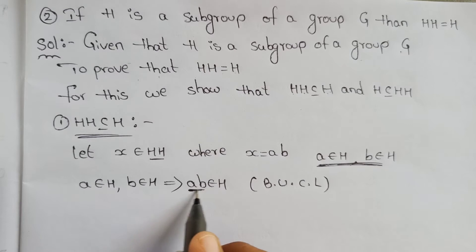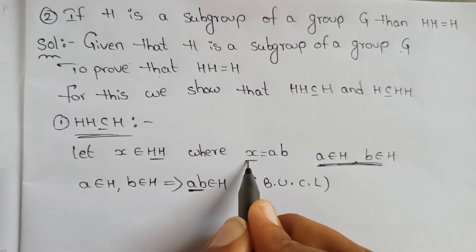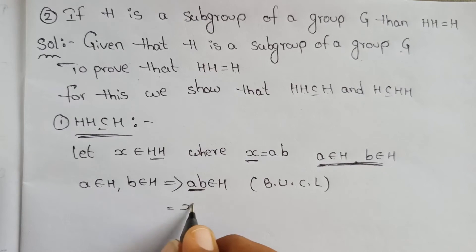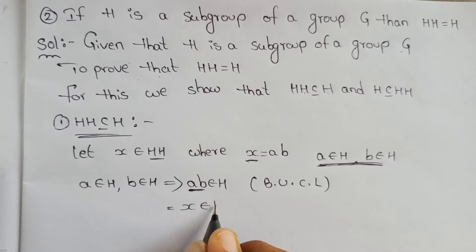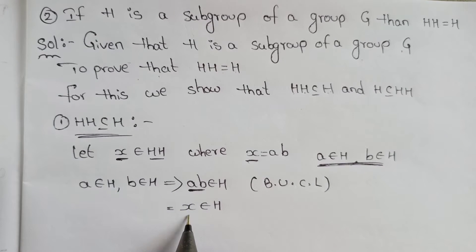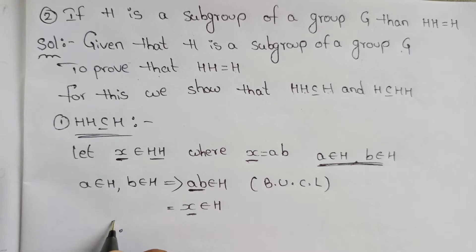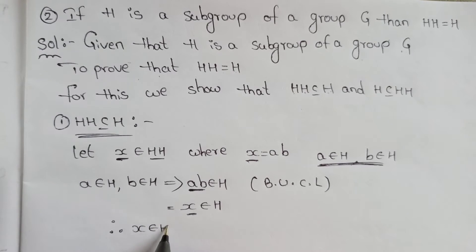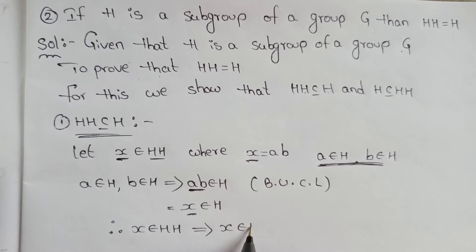By using the closure law, since A equals A and X equals A·B, we get X belongs to H. Therefore, every element X of H·H belongs to H.